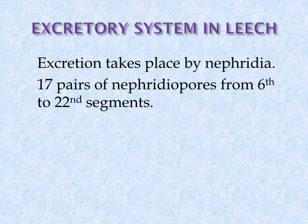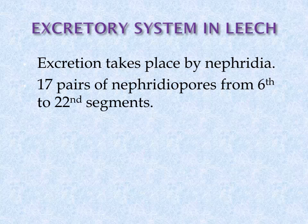Now the excretory system of leech — excretion takes place by nephridia. A total of 17 pairs of nephridiopores are present, with nephridia starting from the 6th to the 22nd segment.